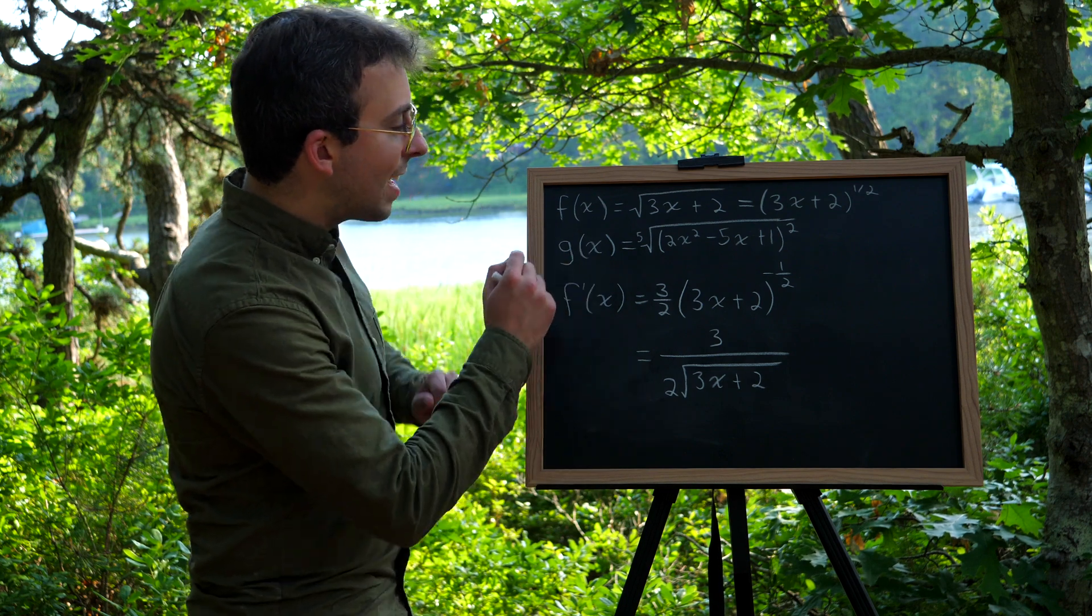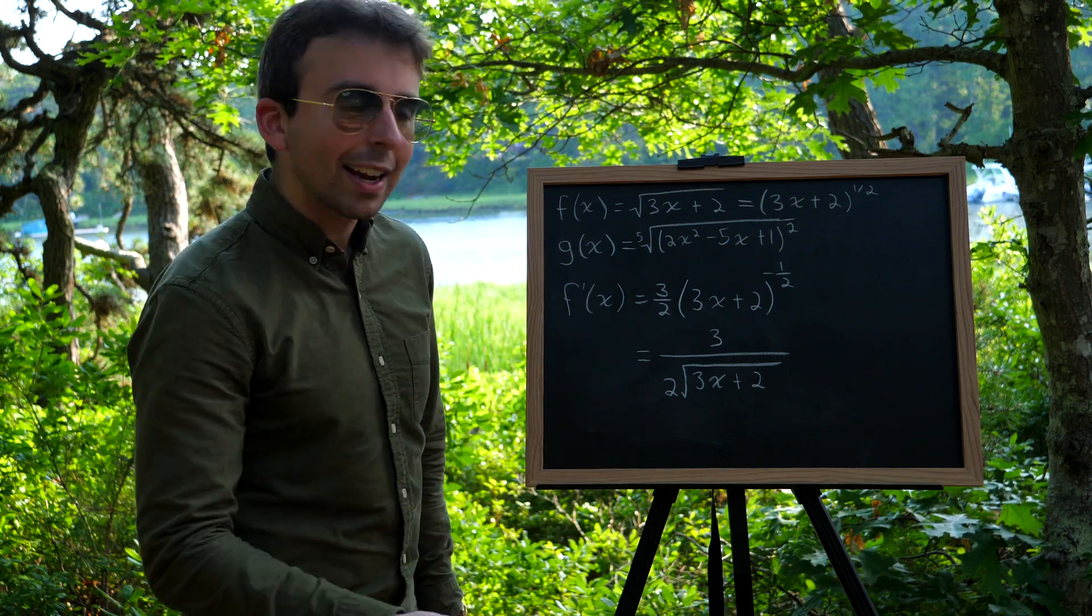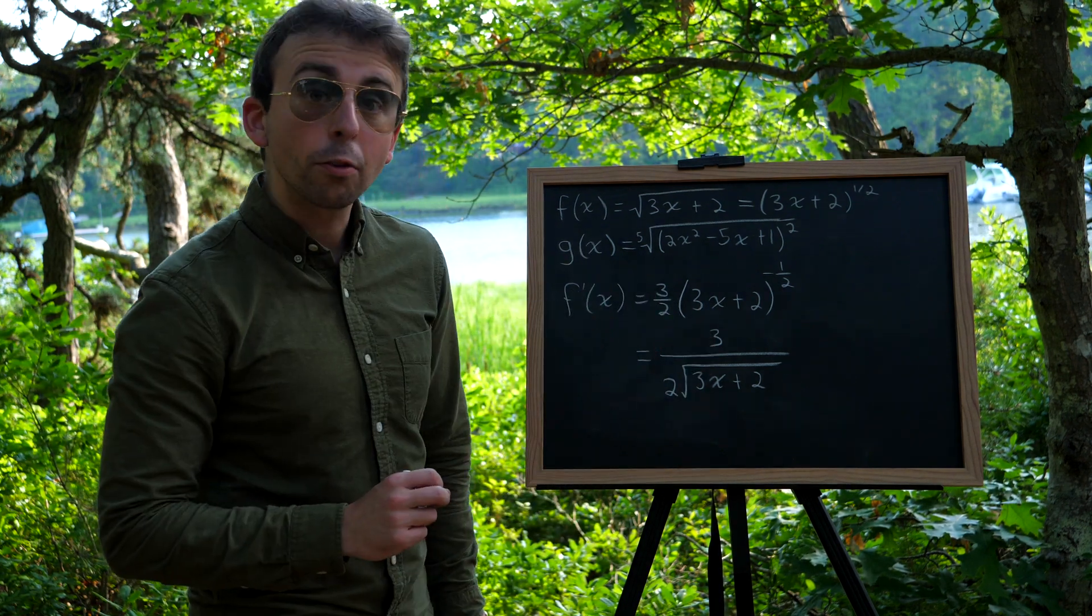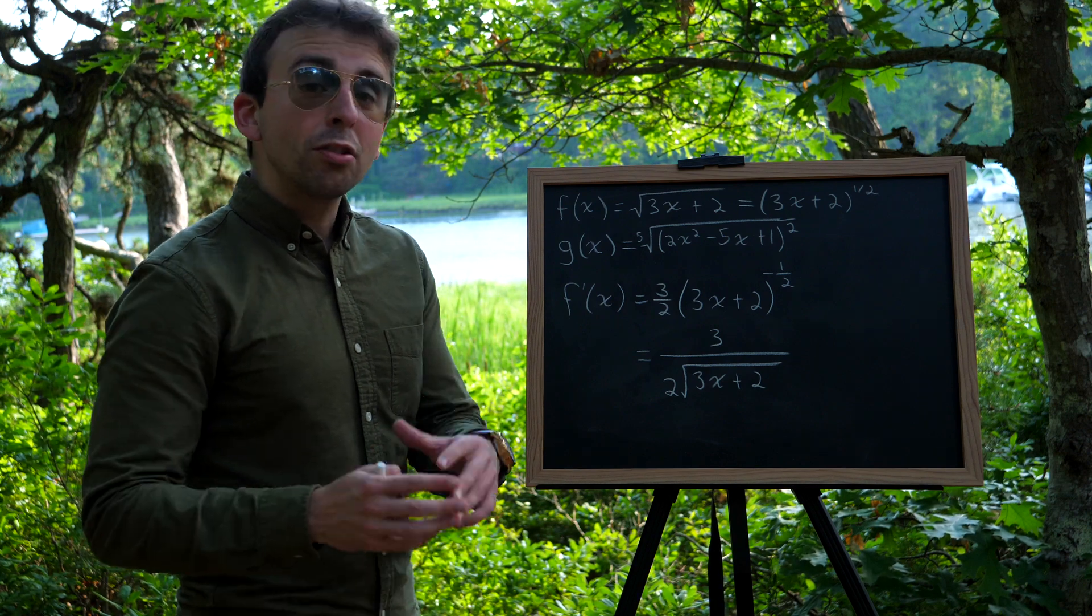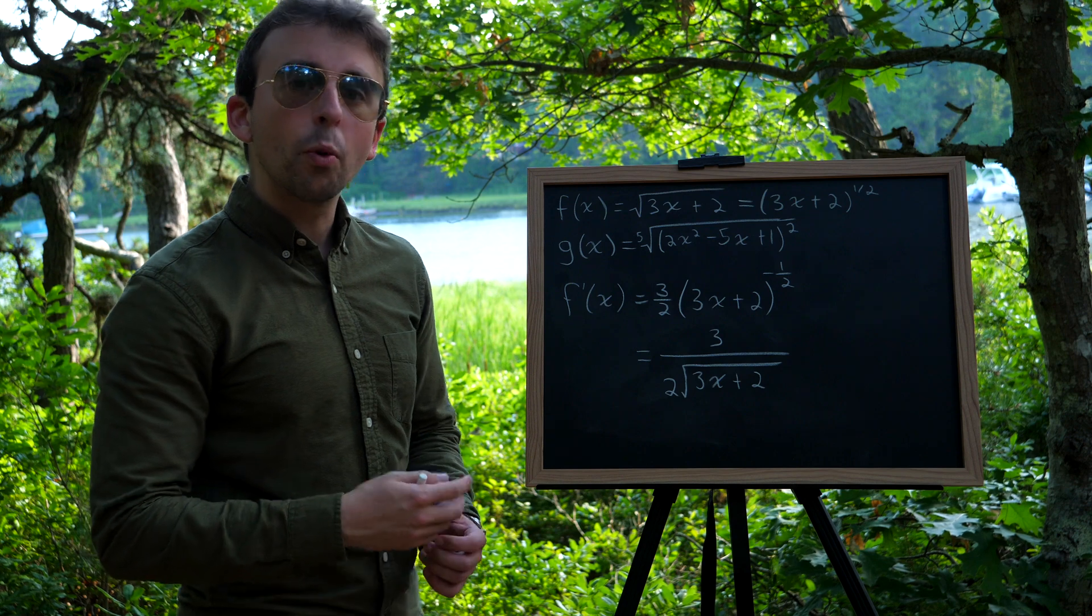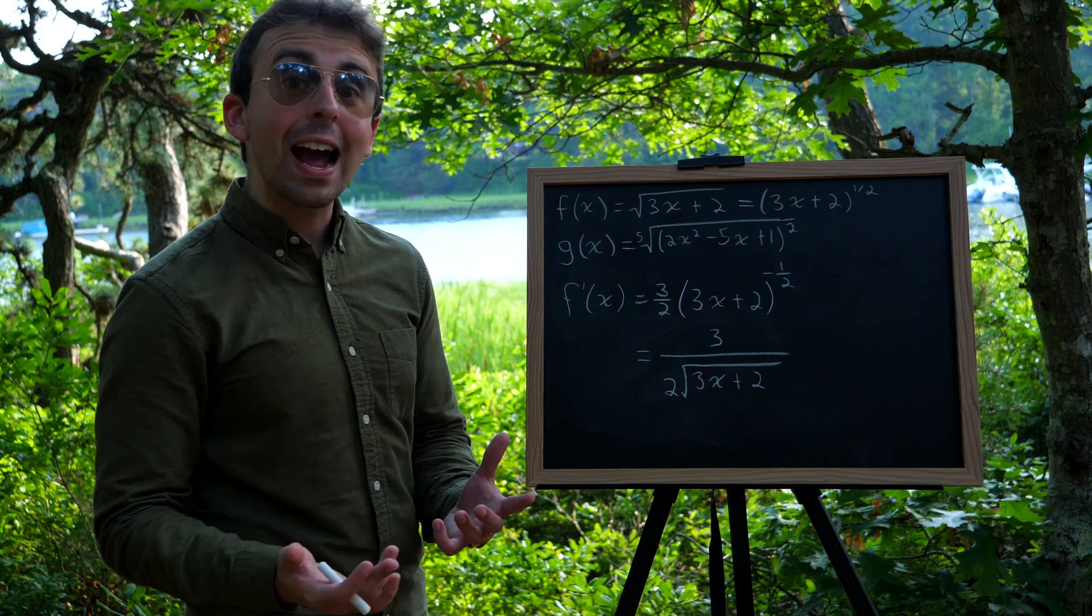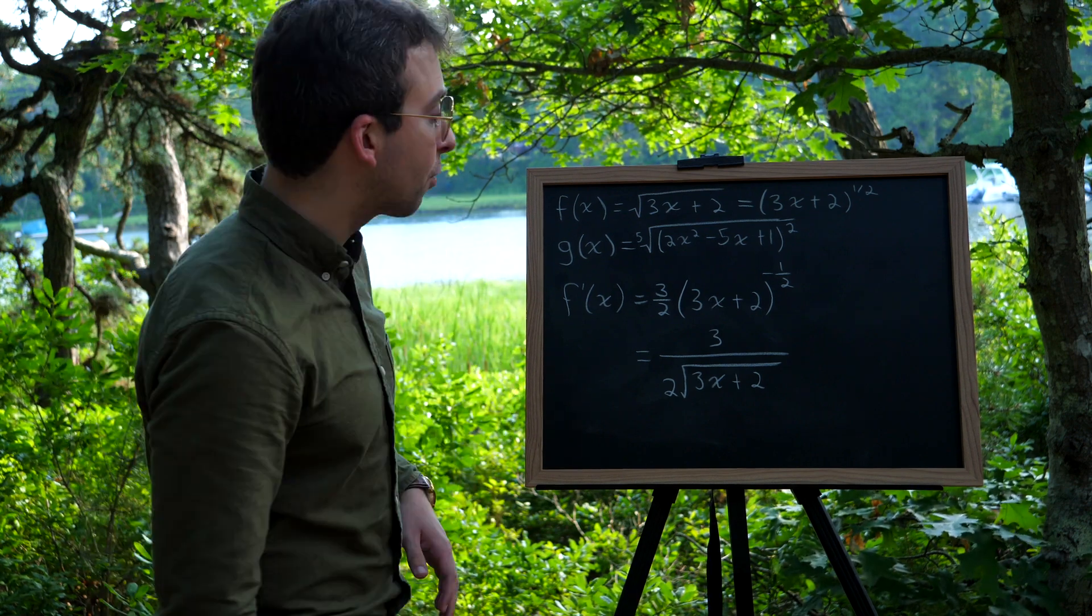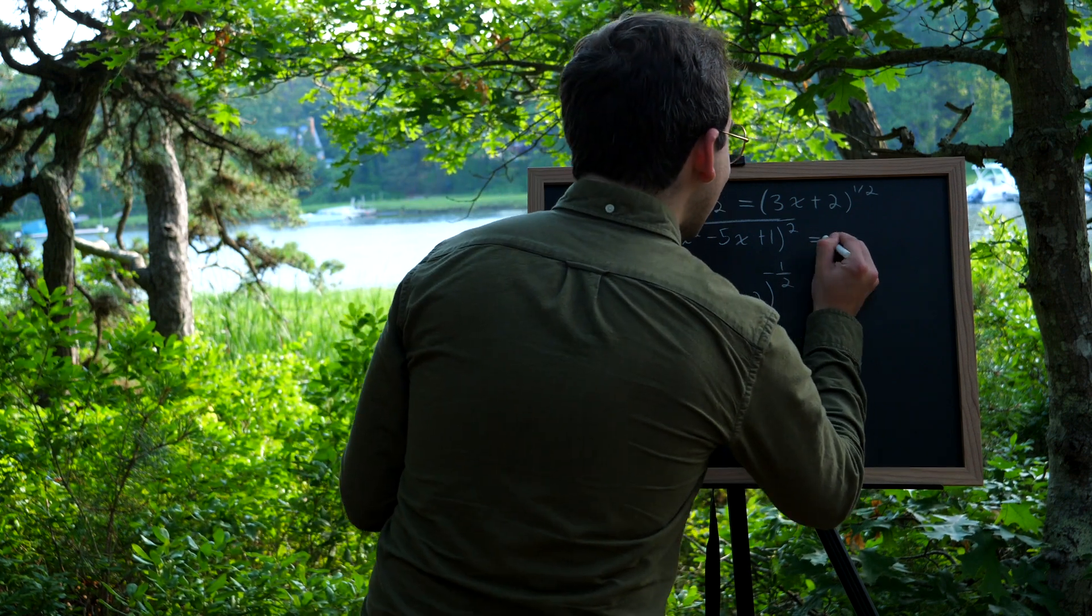Let's go ahead and move on to taking the derivative of g of x. I'll have to erase this to make room. But first, the start is really simple. Remember, if you've got a radical function, you're going to want to rewrite it with a rational or fractional exponent.